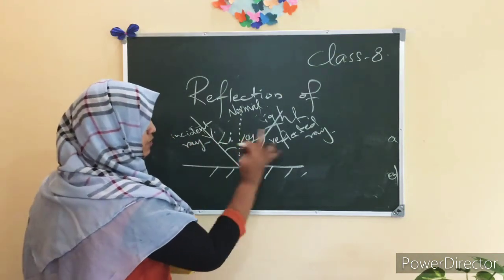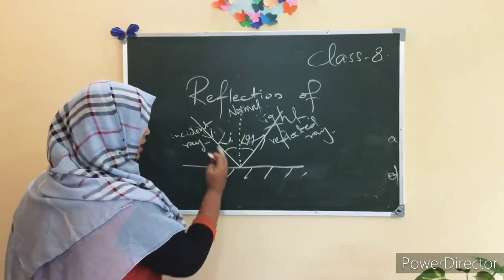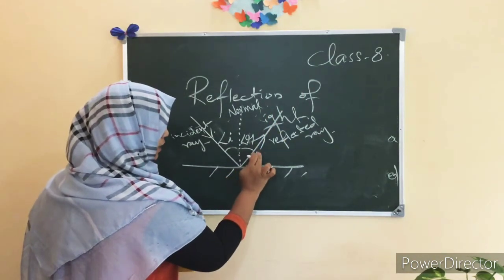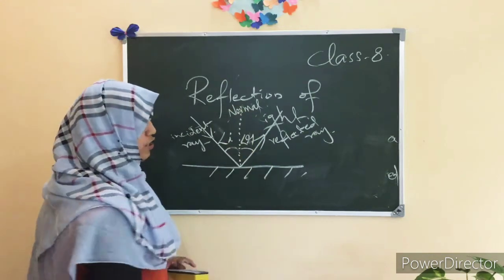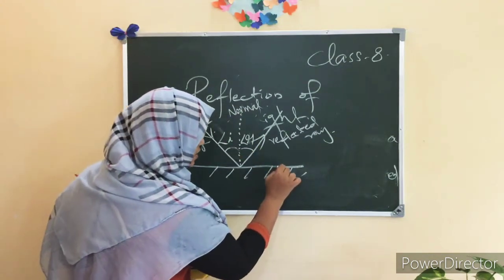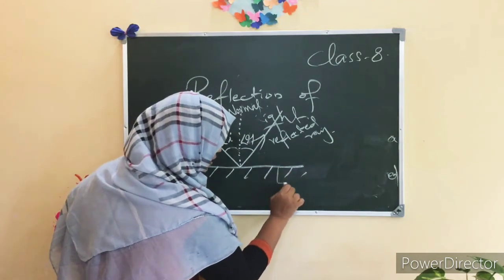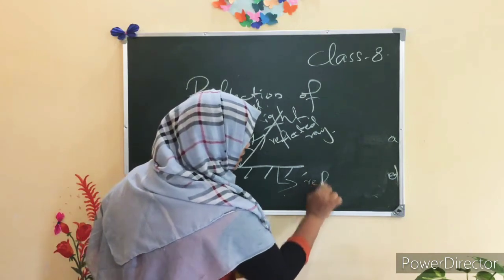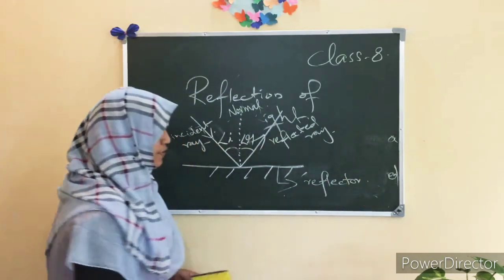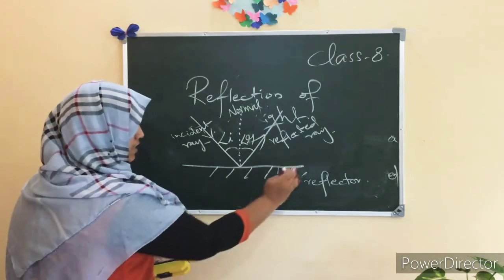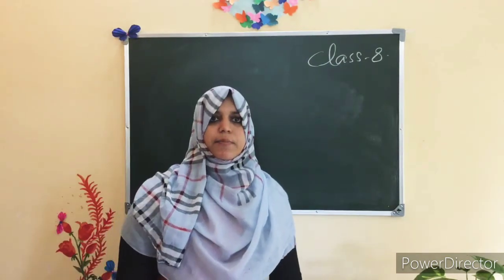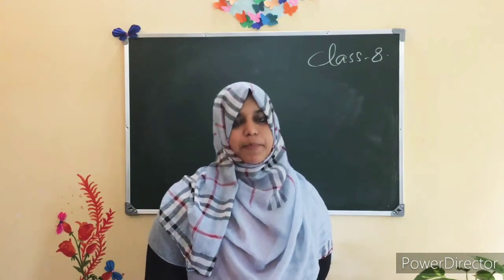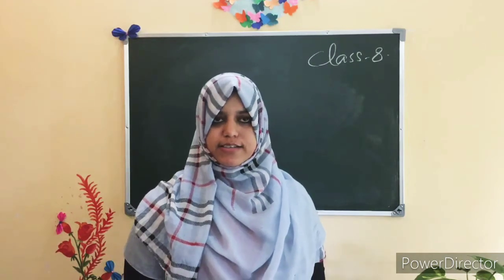So, the new terms here are: incident ray, reflected ray, angle of incidence, angle of reflection, and normal at the point of incidence. A surface which reflects the light is known as a reflector. The polished surfaces are good reflectors.